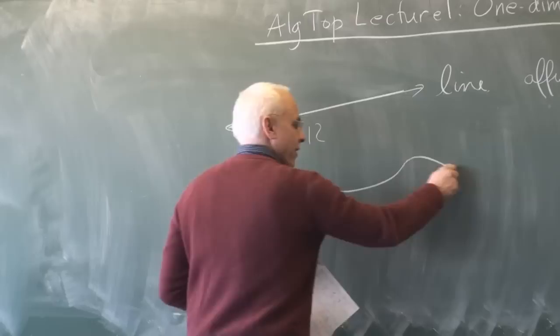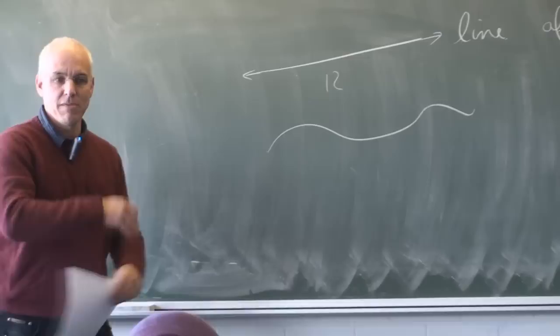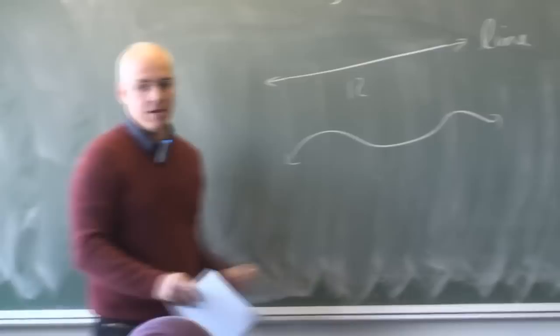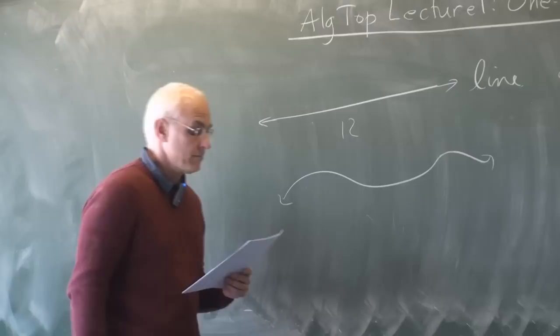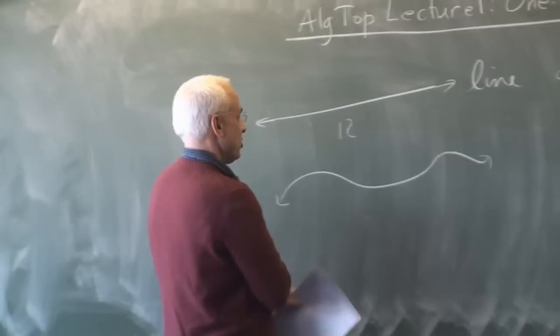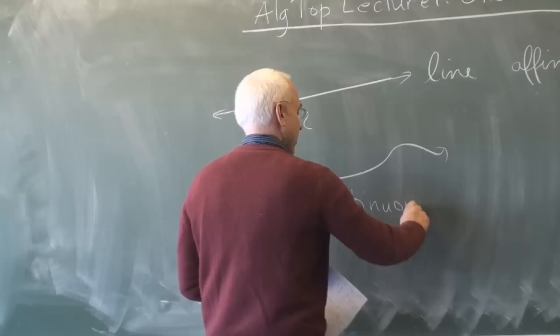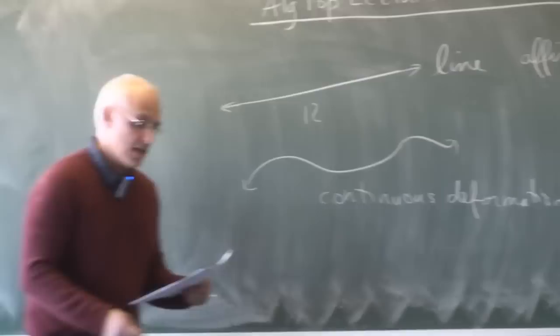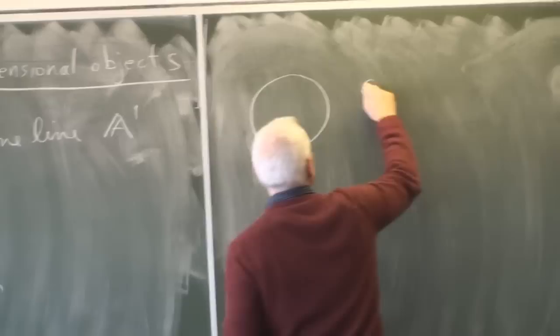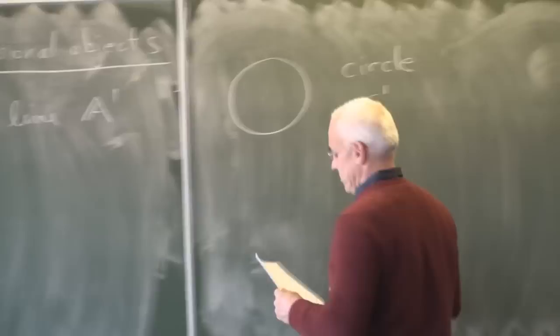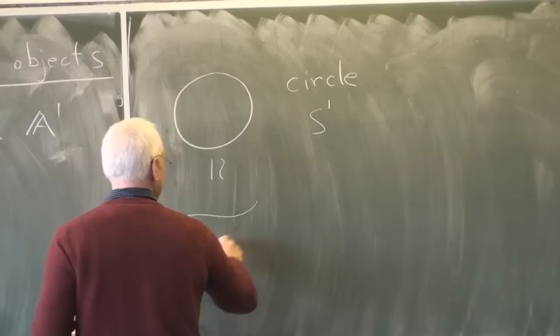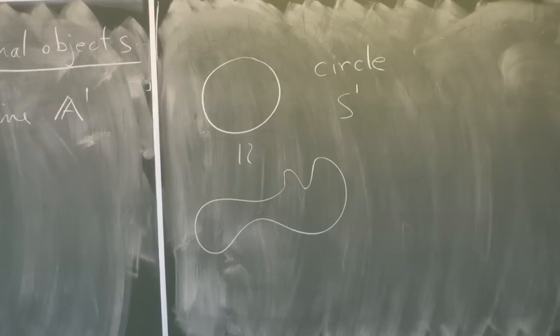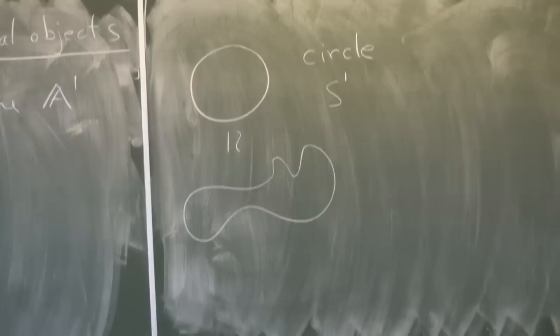Now we're talking about topology, and so A1 is really homeomorphic to a squiggly line — we can bend it, deform it. As long as it keeps going in both directions, it's really the same for us in this course. In geometry it's completely different, but for us it's the same. Continuous deformations are allowed. That's one important one-dimensional object. And there's another important one-dimensional object, which is a circle. We'll give that the name S1. It's also deformable — if we deform it we could get various shapes. As far as topology goes, those are all the same object: the circle.